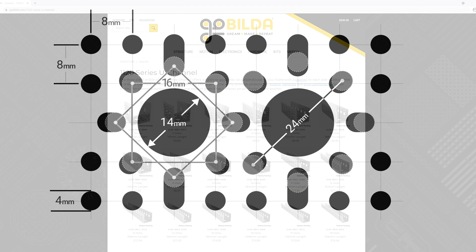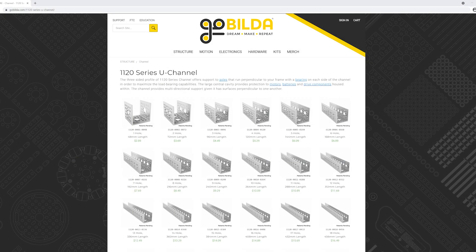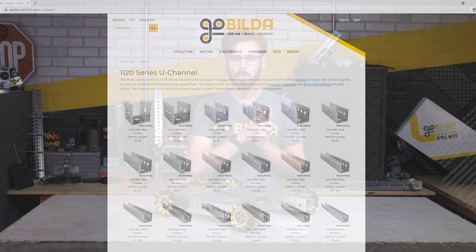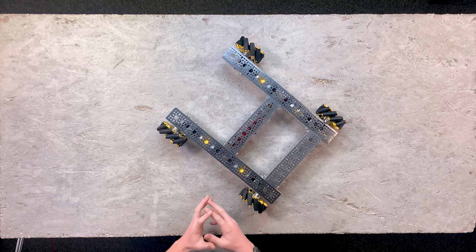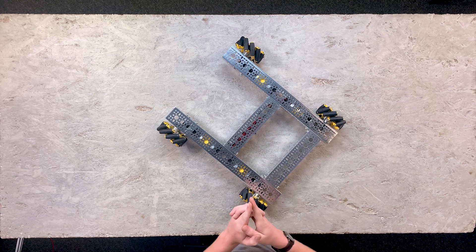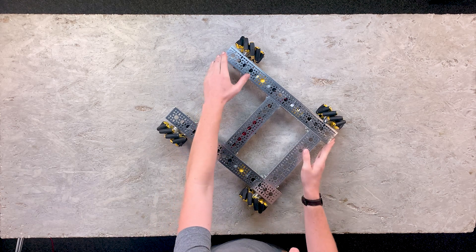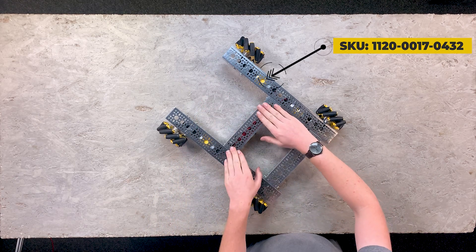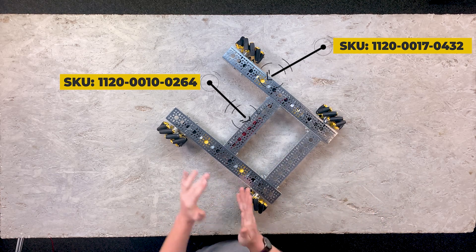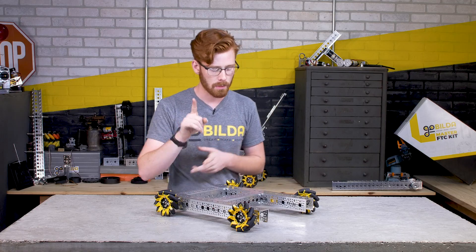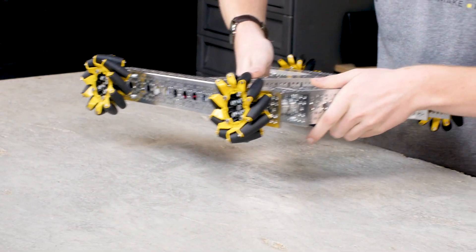You can switch out the lengths of channel for different lengths to modify the size of your robot, which is primarily what we're going to be talking about today. Now the channels that are included in the kit are two different lengths. We have a 17 hole channel for the drive rail and a 10 hole channel for the cross beam width. This was primarily chosen to get your wheels out as far as possible giving you the most stability. But the 17 hole channel has another advantage.